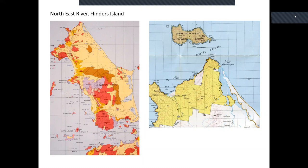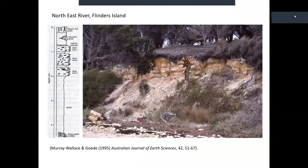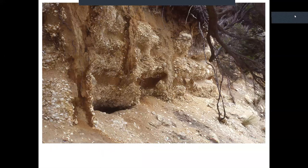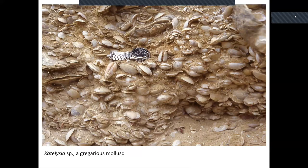Just a couple of other sites of interest, and then some reflection on the broader significance of this work. Just at this location on the Northeast River there's quite a remarkable outcrop. You can see these dominantly Katelysia — Katelysia rytifera is the main species — remarkable productivity, just building the sediment. This slightly closer photograph shows that they're articulated and in life position: they really haven't been transported at that location.